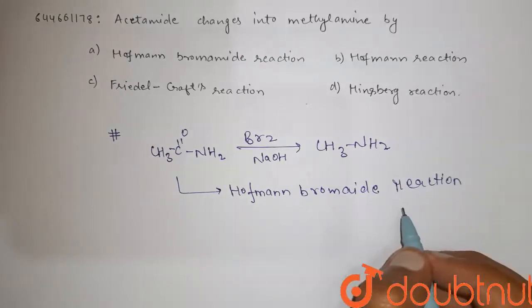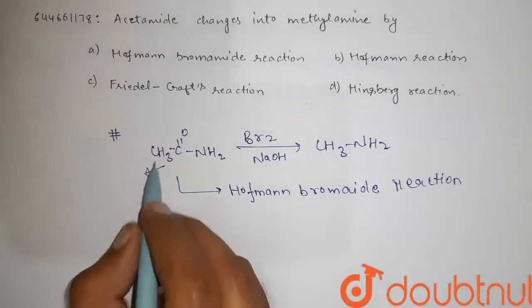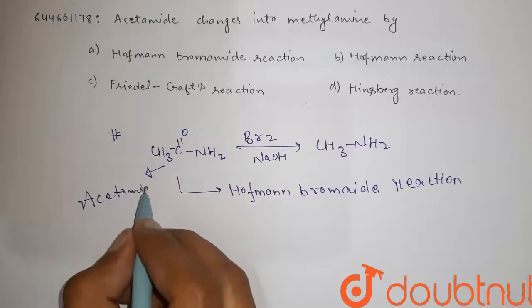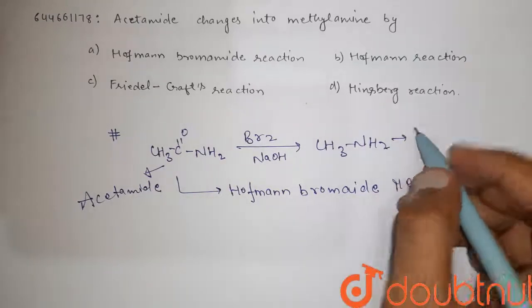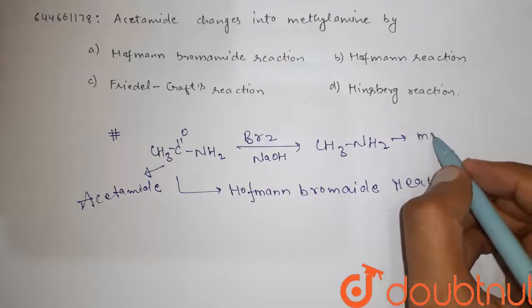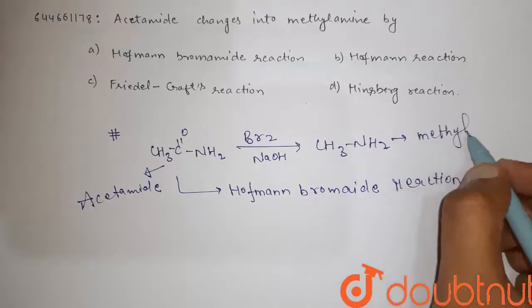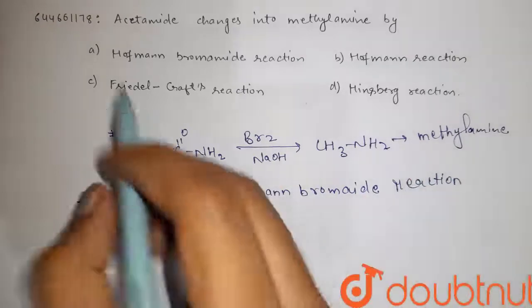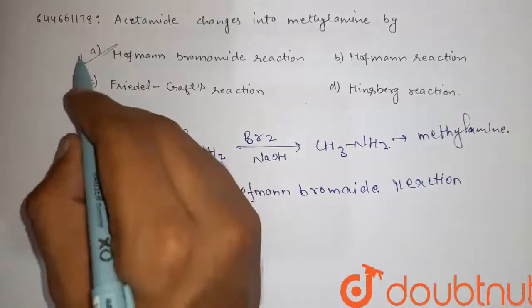Okay, so this is acetamide and the product we get is methylamine. So the correct option is option A. Thank you.